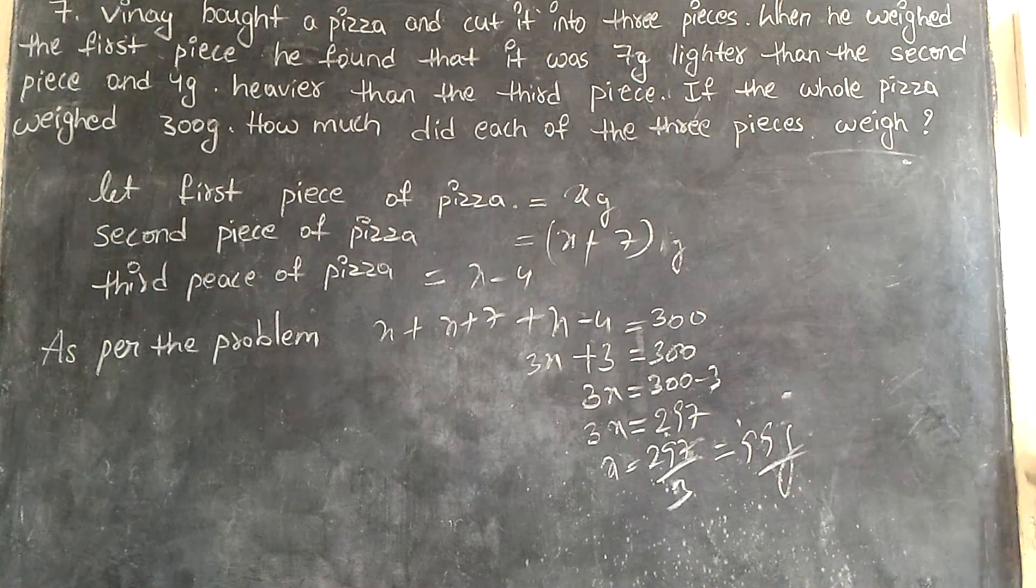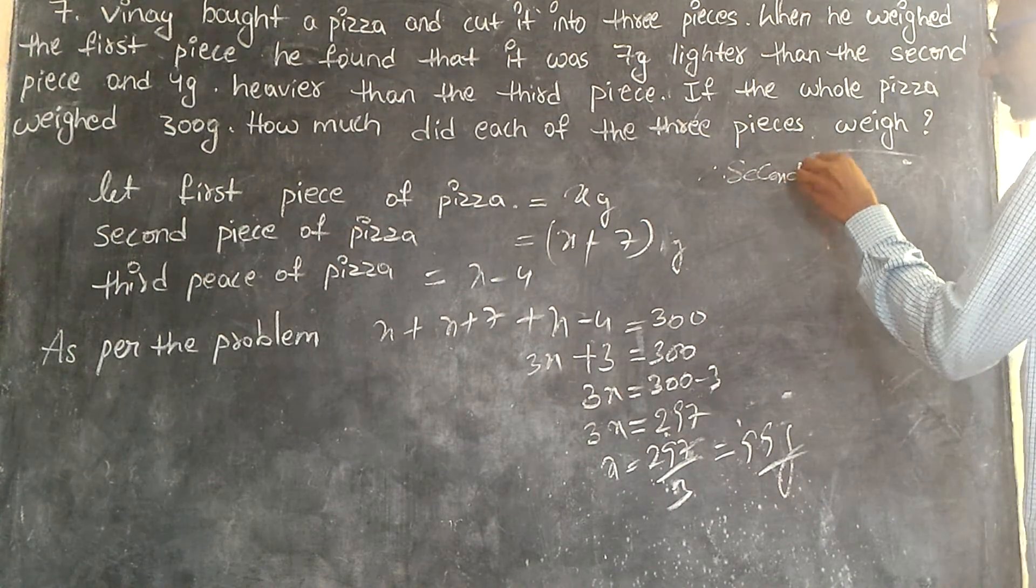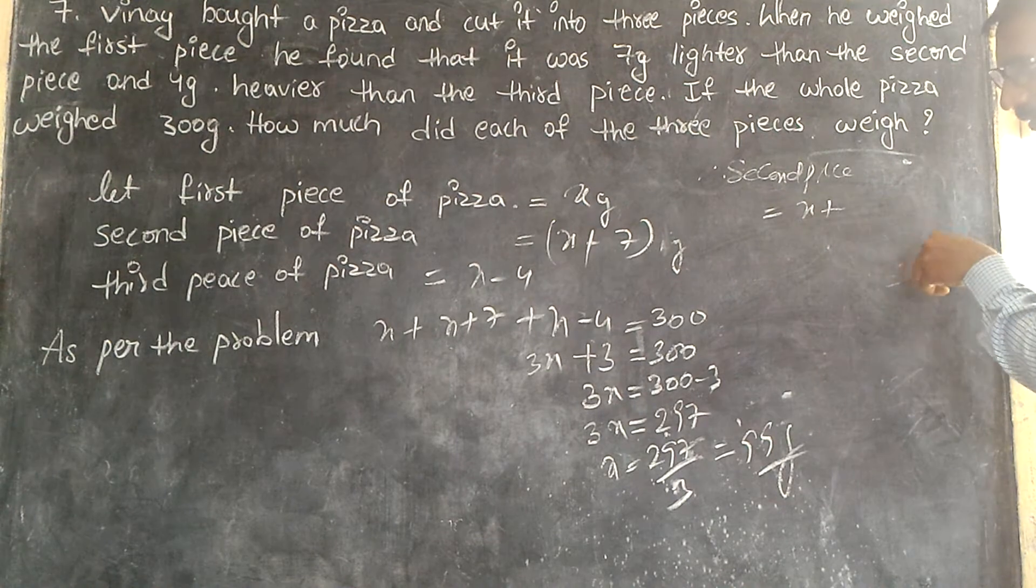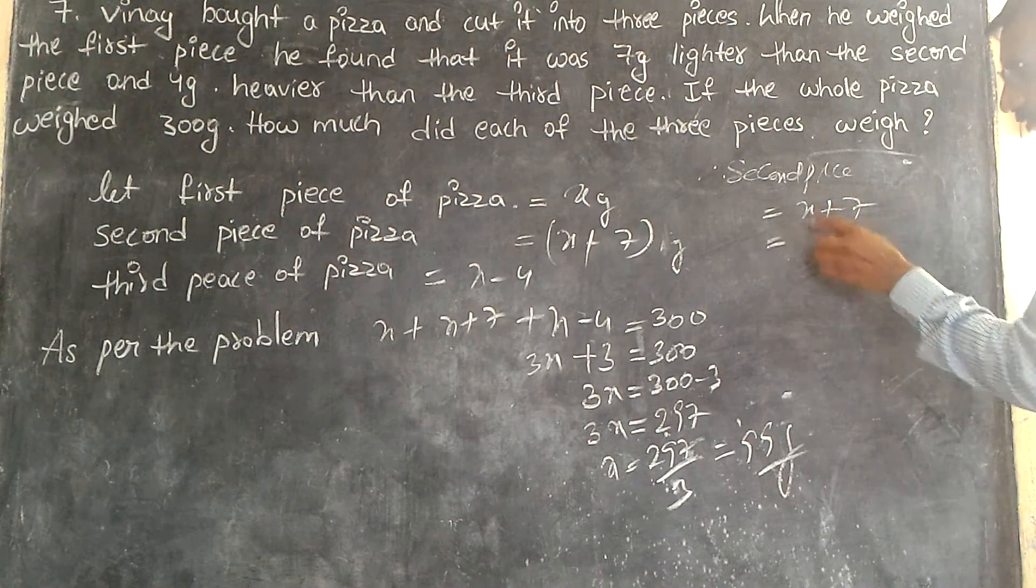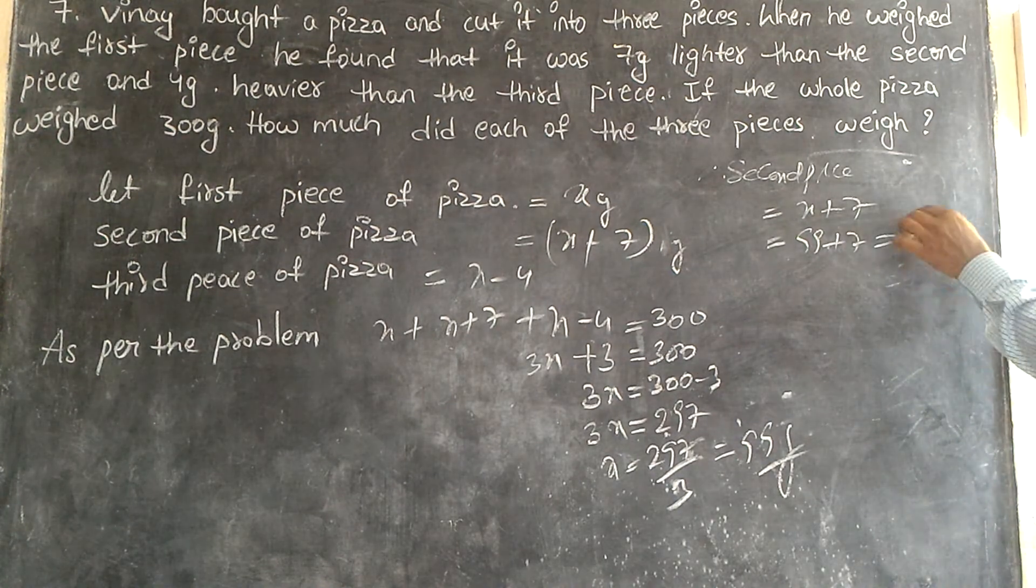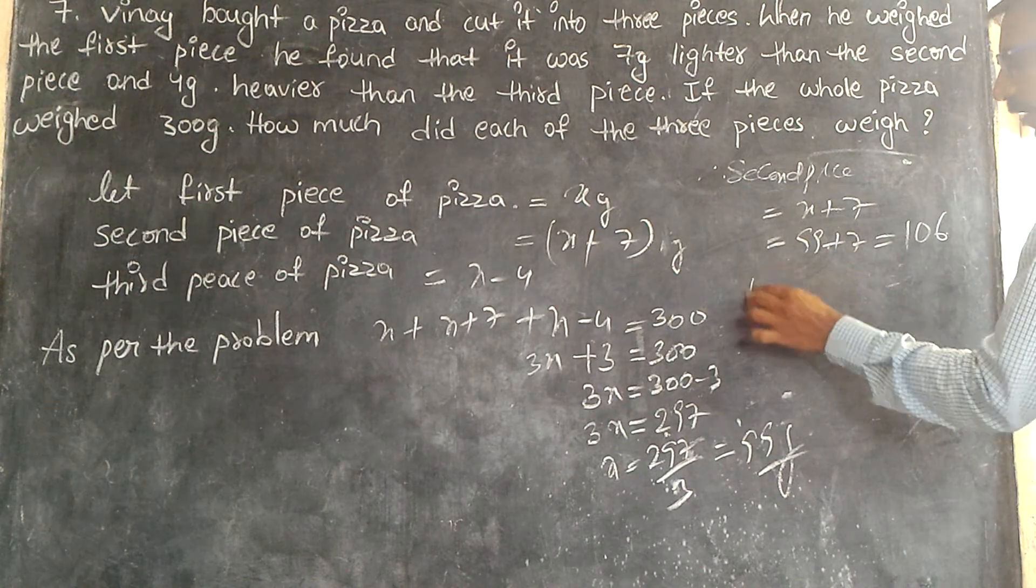Now we will go to second piece. Therefore, second piece is equal to X plus 7. What is my X? 99 plus 7. How much? 106. The last one is third piece.